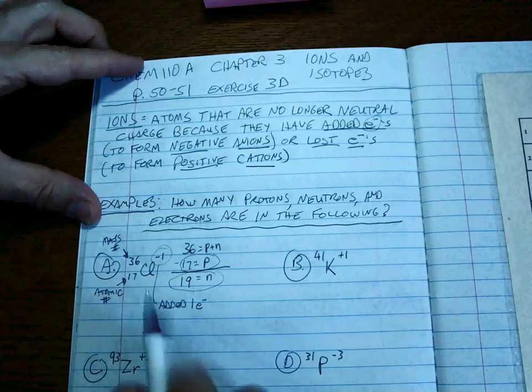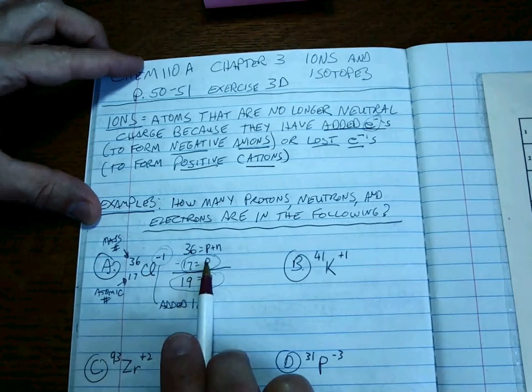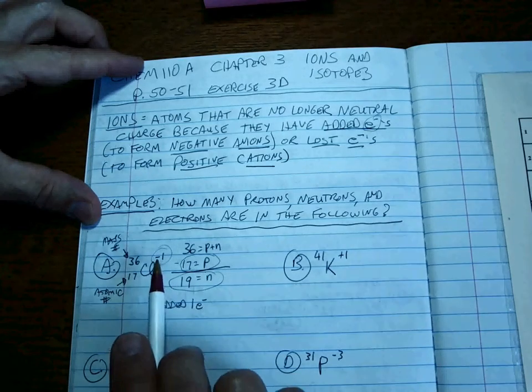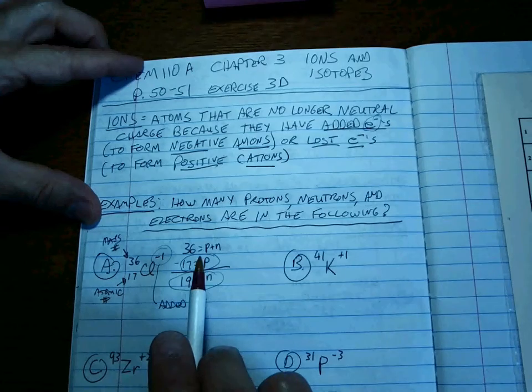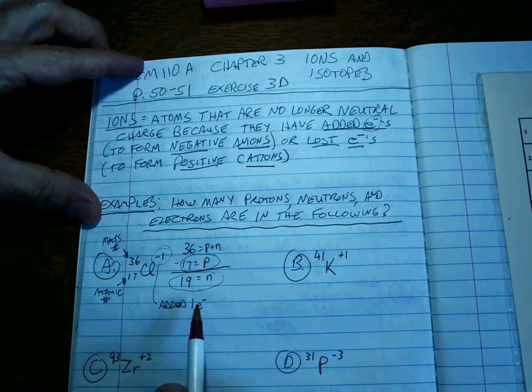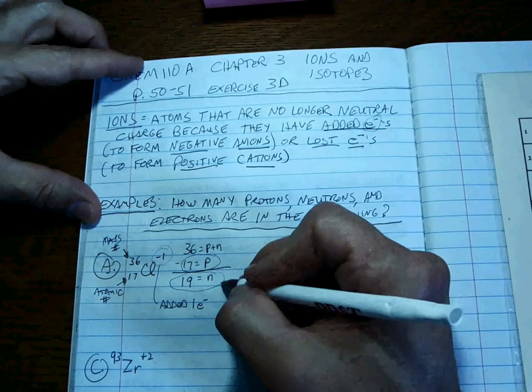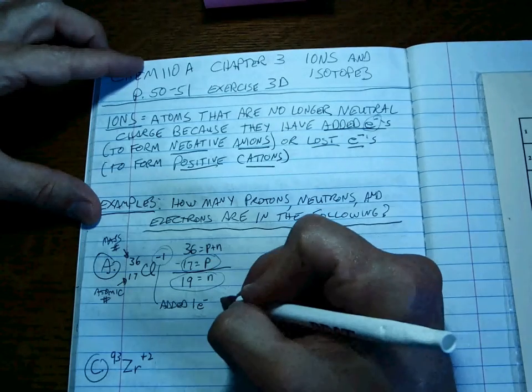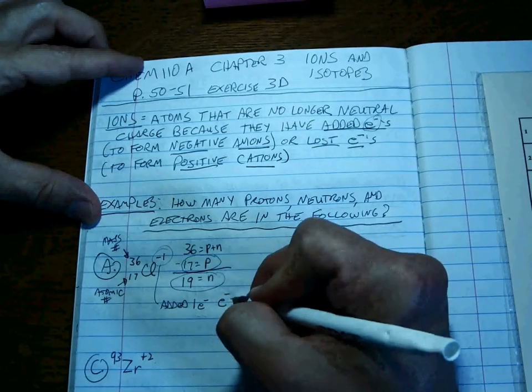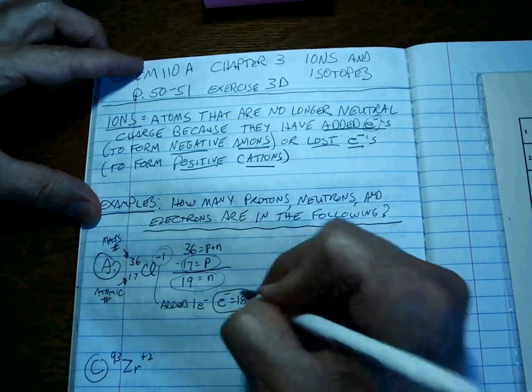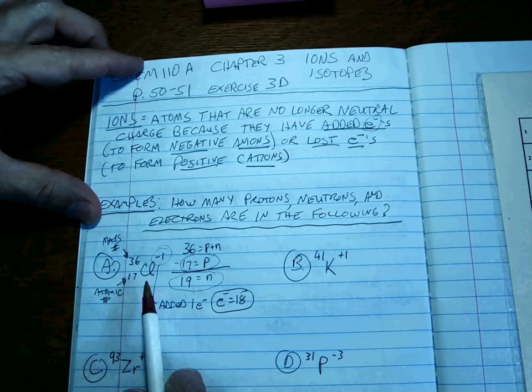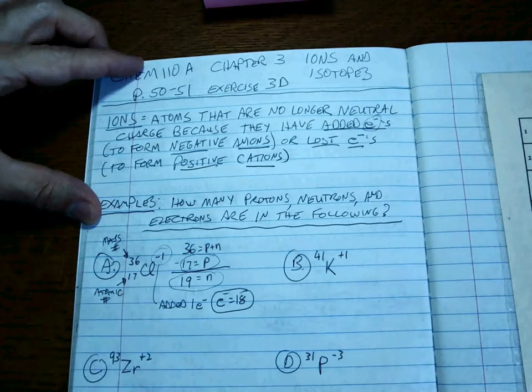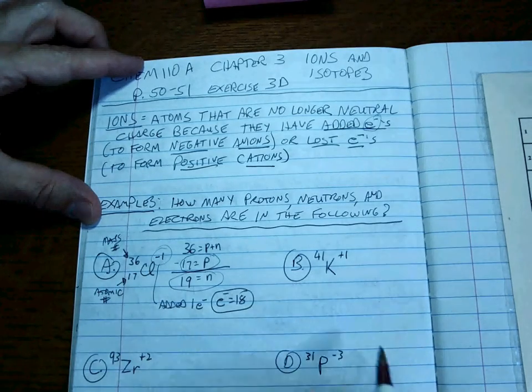Whenever it's a neutral atom, it's the same number of protons and electrons, but since it's a minus one charge left over, that means we've added one more electron. So, 17 protons, therefore 18 electrons. And those are the three subatomic particles for this particular ionic isotope. So let's keep going.